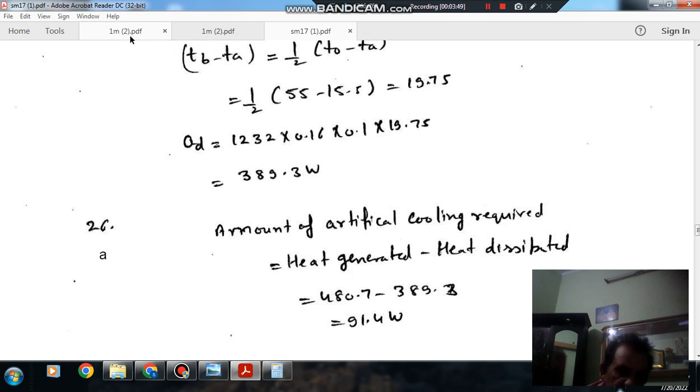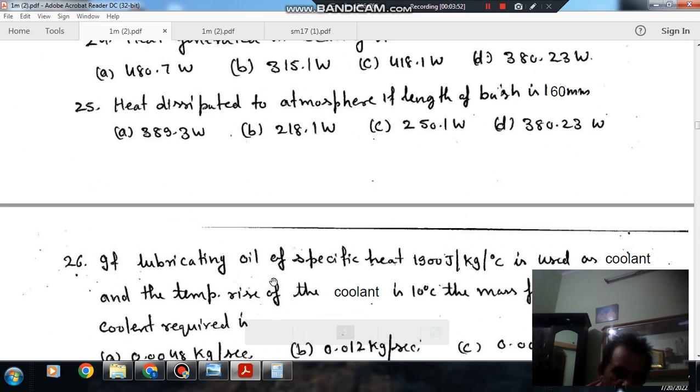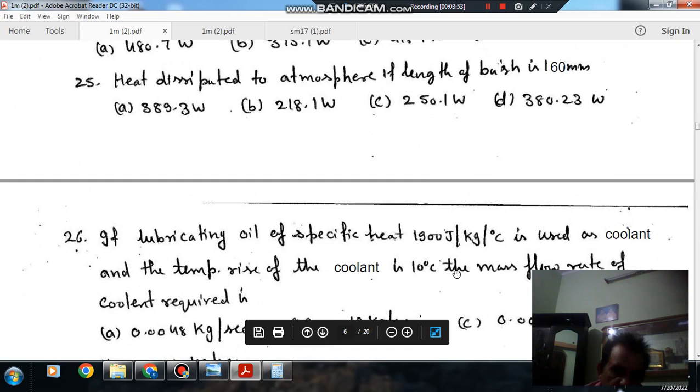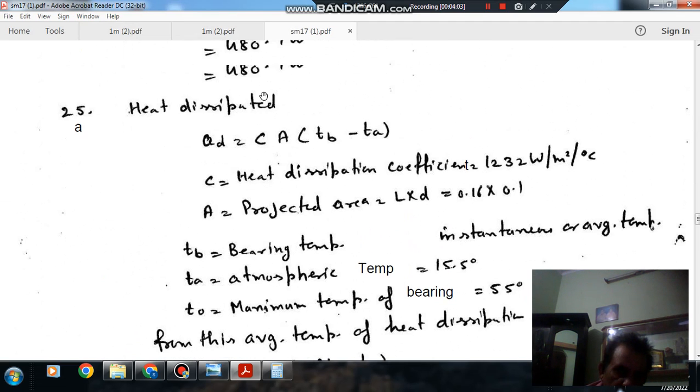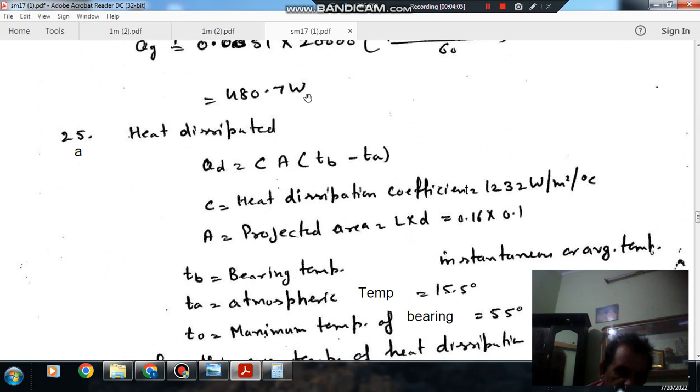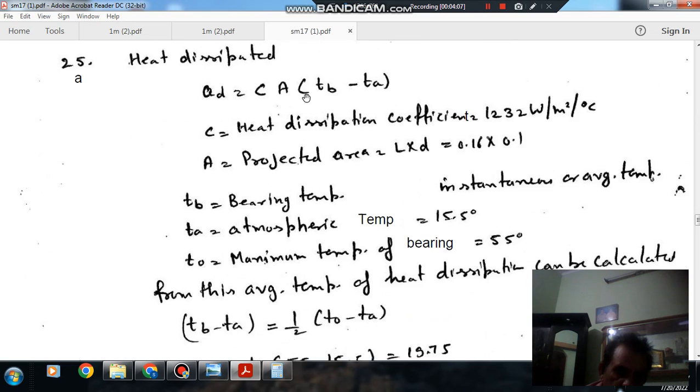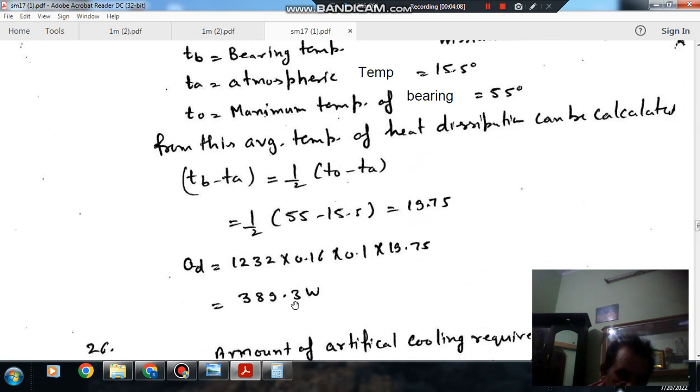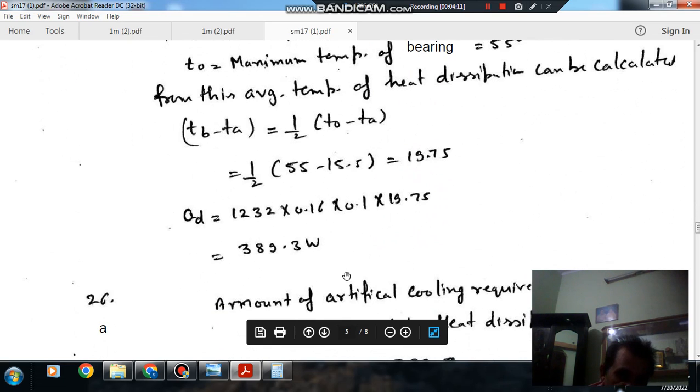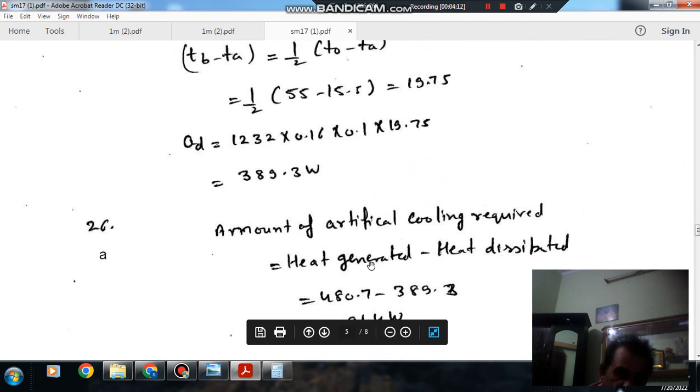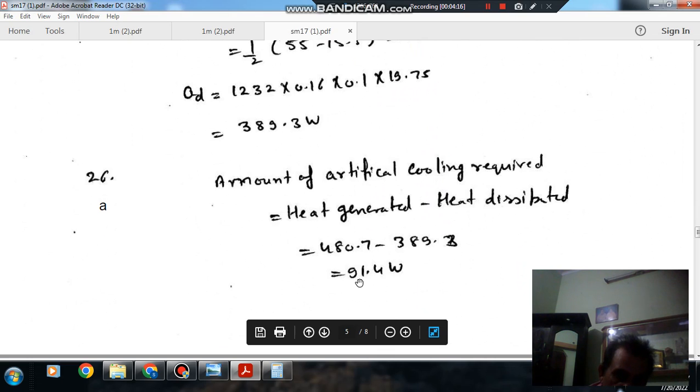Now question 26 is amount of the coolant required, if the mass of the coolant required if the artificial cooling is required. Because total heat generated is 480.7 Watt, and heat dissipated to the atmosphere is 389.3 Watt. So difference of that heat will be carried by the coolant. So amount of heat that the coolant will take is 91.4 Watt.